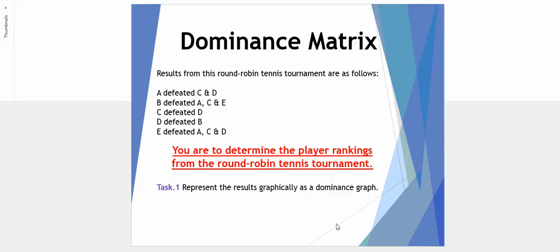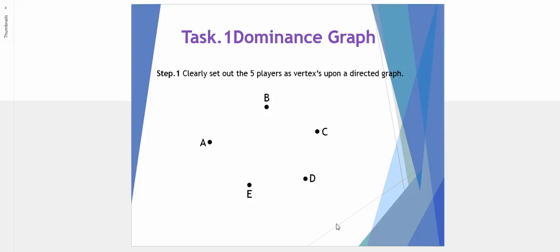Here are the results for the tournament - who beat who. We are to determine the player rankings from the round-robin tournament, and to do this we're going to use a dominance matrix. So task number one is to represent the results graphically as a dominance graph.